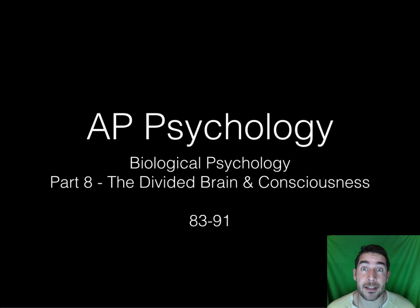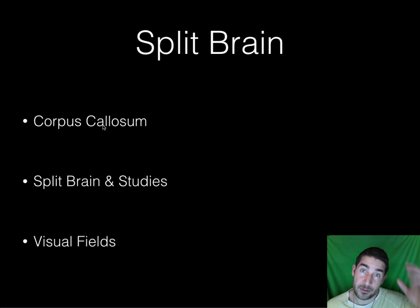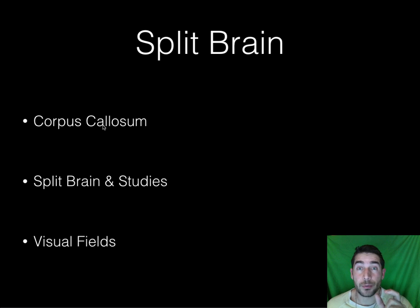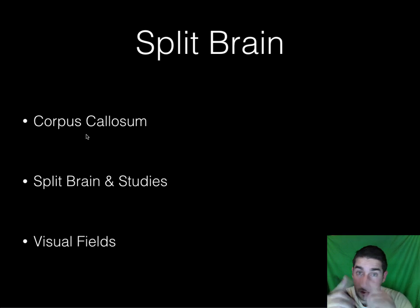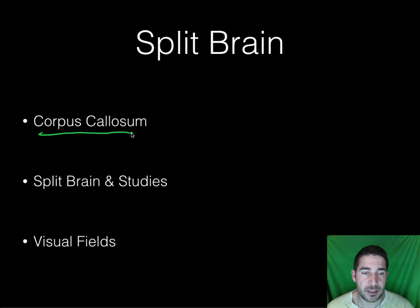Hello, this is the last, the eighth part of biological psychology. We're going to cover the divided brain and consciousness. Our brain is divided into two halves — your left side and your right side. Right down the middle is a really thick band of nerve fibers, and we call that the corpus callosum, which connects the left side of your brain to the right side.